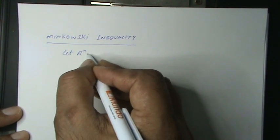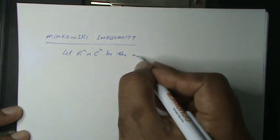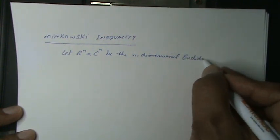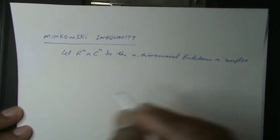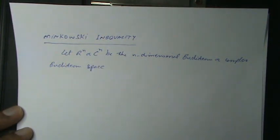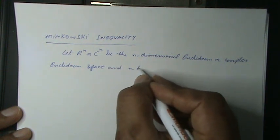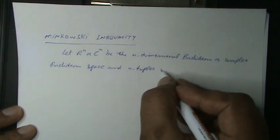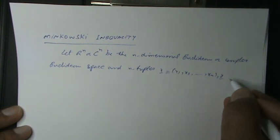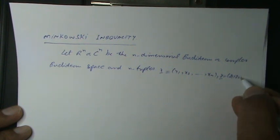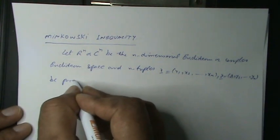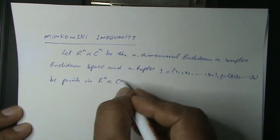Let R^N, R_C^N be the N-dimensional Euclidean or Complex Euclidean Space, and N-tuples X-vector = (X1, X2, ..., XN) and Y-vector = (Y1, Y2, ..., YN) be points in R^N or R_C^N.